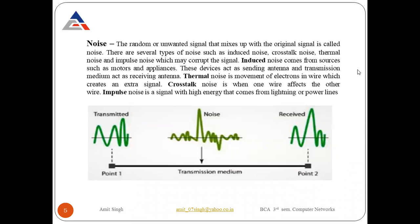Induced noise comes from sources such as motors and appliances — noise generated by some devices. Suppose there is a motor that is working and it produces some type of noise. These types of noises are known as induced noises. These devices act as a sending antenna and the transmission medium acts as a receiving antenna, through which they can send the noise.